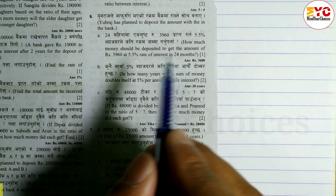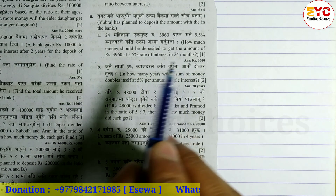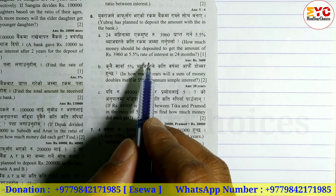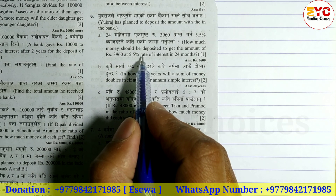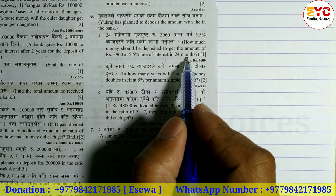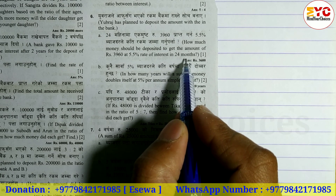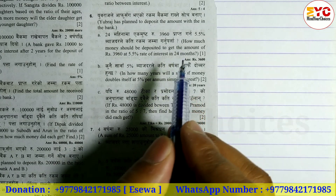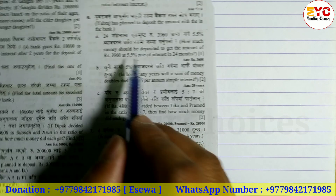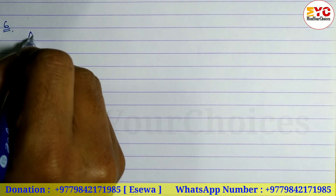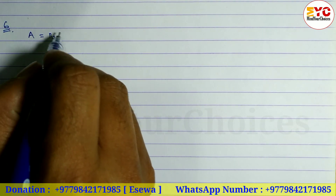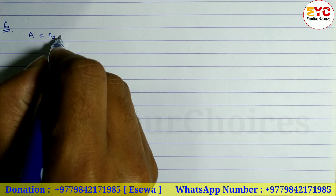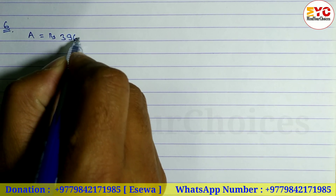Amount bhanne ko ke? Amount — paisa jamma gare pachhi amount aaucha. Amount bhanne ko principal plus interest. This washi at 5.5% rate bank. Amount is equal to rupees 3960.